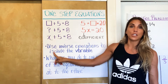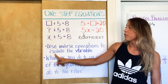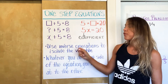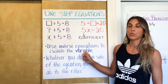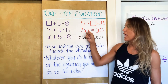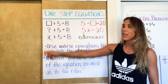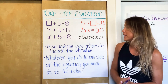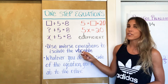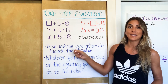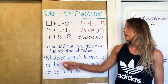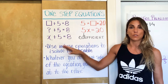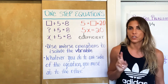When something's in isolation, it's by itself. So our goal is to get the variable by itself, and the way we're going to do it is by using opposite operations. This will make a lot more sense in just a moment.